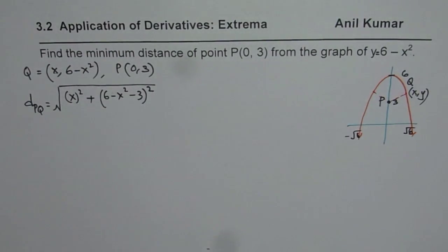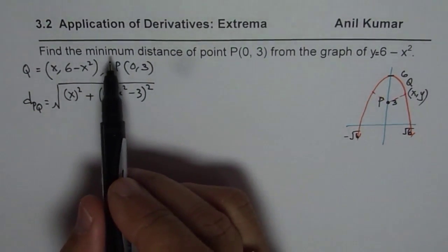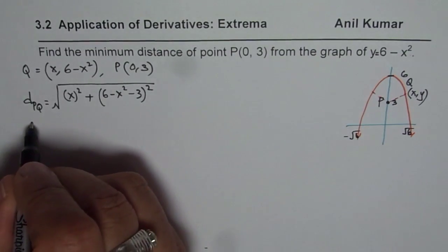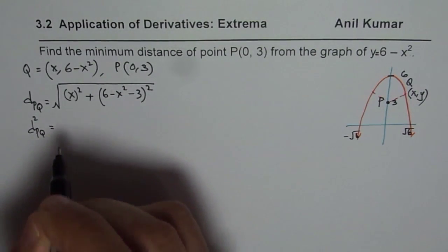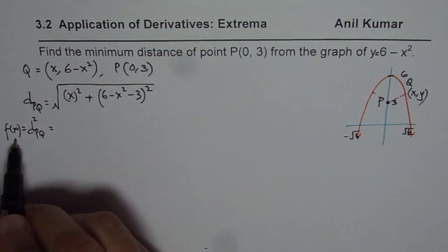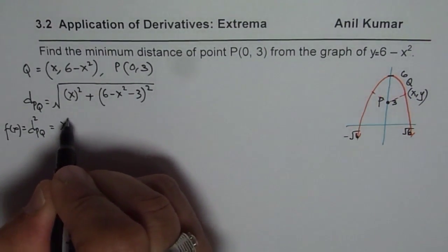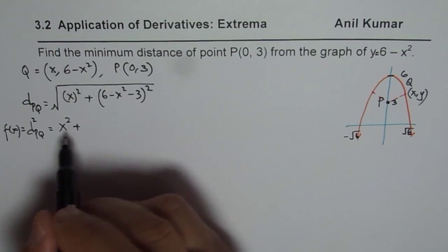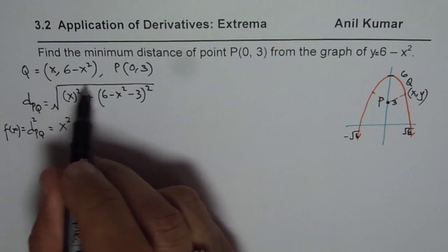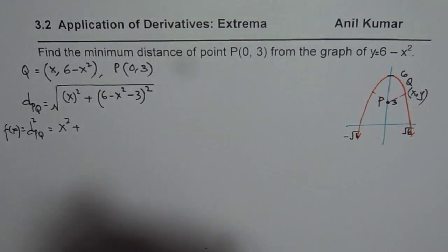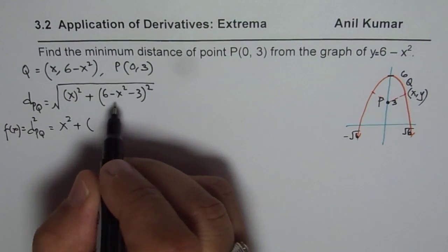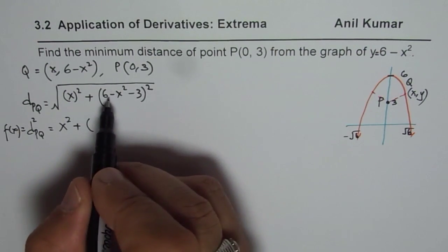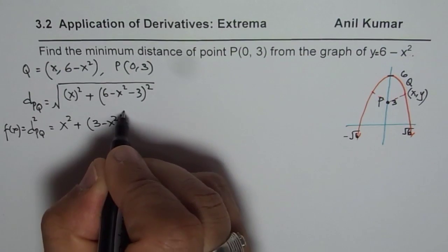Since minimizing the distance squared also gives the minimum distance, we square both sides to get a new function f(x) to minimize. This helps simplify the calculations so we don't deal with a complicated derivative. We can simplify the second term: 6 minus x squared minus 3 equals 3 minus x squared. So f(x) equals x squared plus (3 minus x squared) squared.